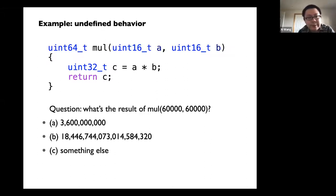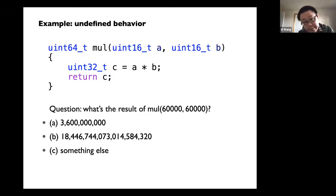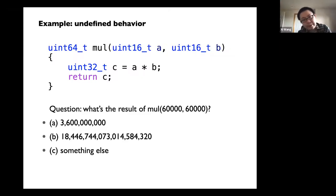What it does is compute a multiplication of two unsigned 16-bit integers A and B. The code is really simple — it does a multiplication, assigns the result to C, which is unsigned 32-bit, then returns the result C. The function's signature actually has a 64-bit unsigned integer in the end.